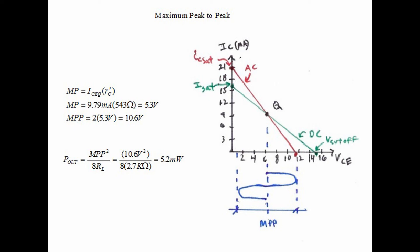Once we have MPP we can calculate power out which is MPP squared divided by 8 times RL. RL being the load resistor, so in this case is 5.2 milliwatts.